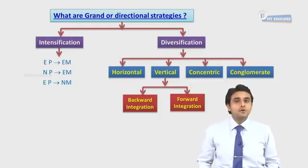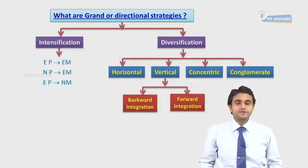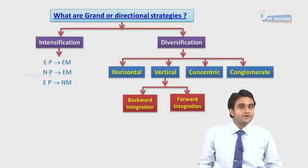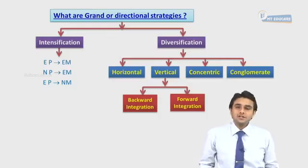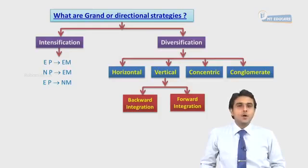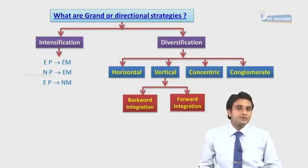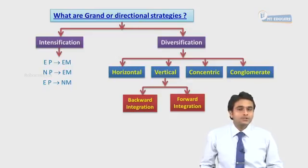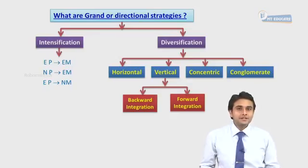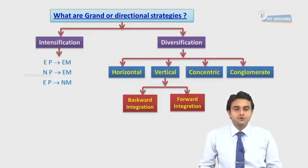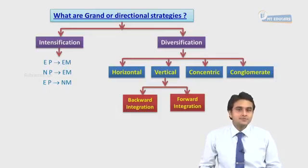On the other hand, conglomerate diversification refers to diversification where one facility cannot be used to produce other products the business is into. For example, MTA Educare provides education to junior college students — that is, 11th and 12th standard — and the same classrooms used to coach those students.